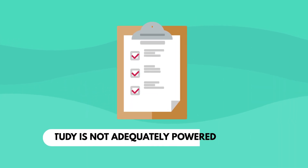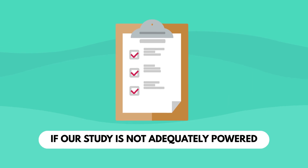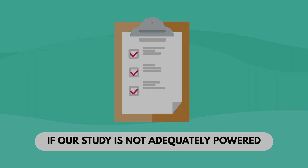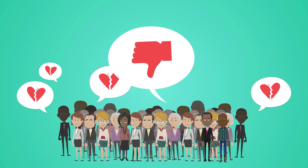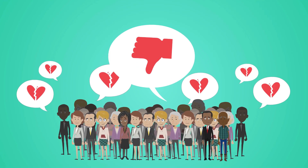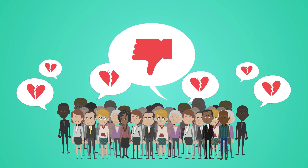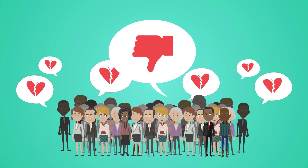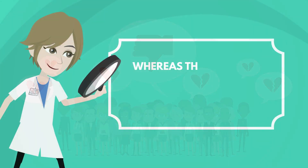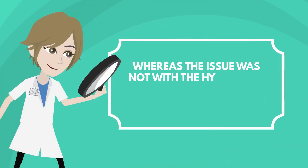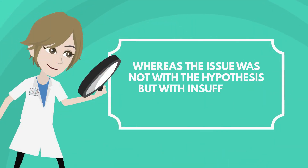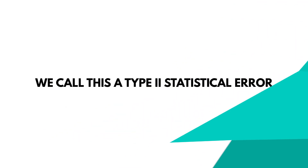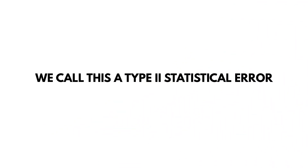In the same vein, if our study is not adequately powered, we may end up concluding there is nothing interesting happening as far as differences between the treatment groups, whereas the issue was not with the hypothesis, but with insufficient sample size. We call this a Type 2 statistical error.